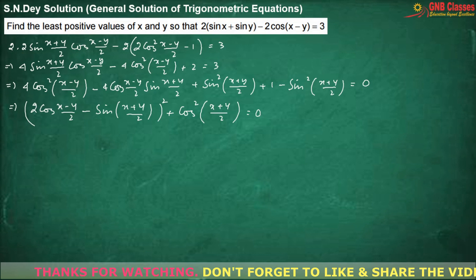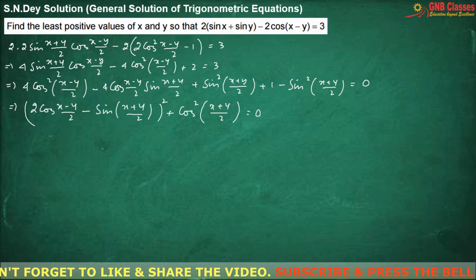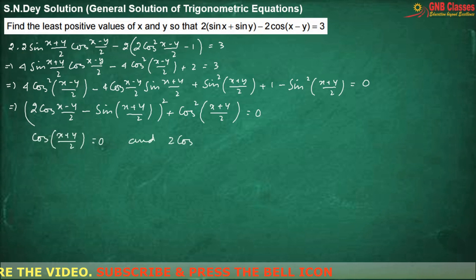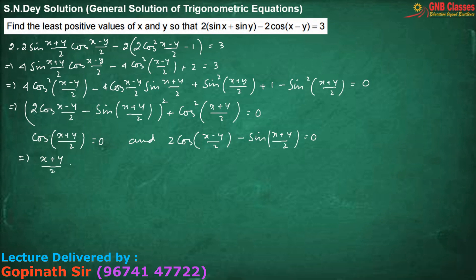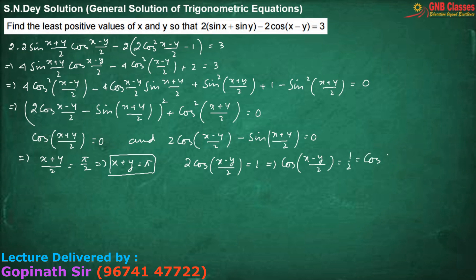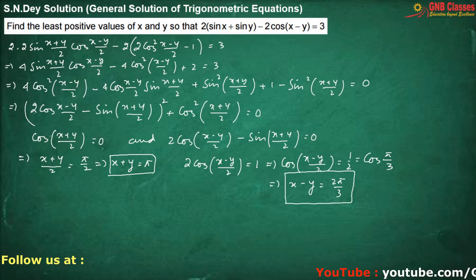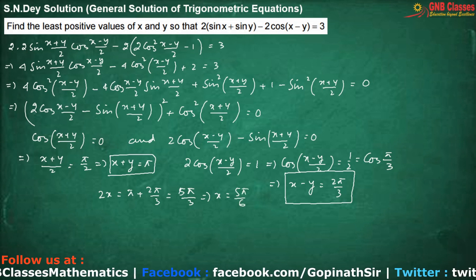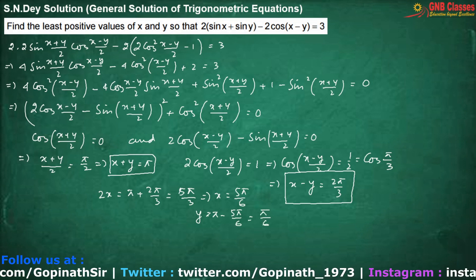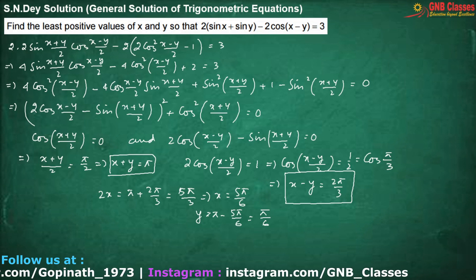Adding and subtracting sin²((x+y)/2) so the terms get nullified, we get the sum of two squares equal to zero, so individually they equal zero. We need the least positive values, so (x+y)/2 = 0 gives x + y = 0 (phi), and from the second equation we get cos(π/3), so (x-y)/2 = π/3. Solving both equations, x = 5π/6 and y = π/6 respectively.